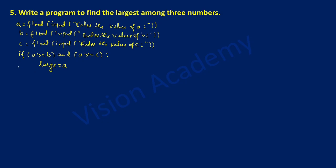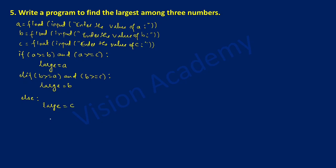After writing the if statement there must be indentation — either one space or a tab space. Next we will use the elif statement, checking if b is greater than or equal to a AND b is greater than or equal to c, then colon. If this condition is true then large is equated with value b. The next statement is else colon, and if everything is false then large is equated with value c.